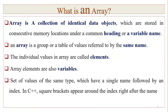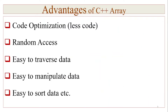An array is a set of values of the same type which have a single name followed by an index in square brackets, which indicates the size. This enables code optimization.